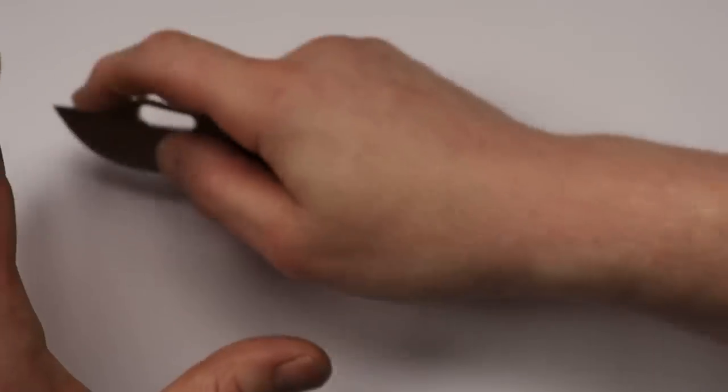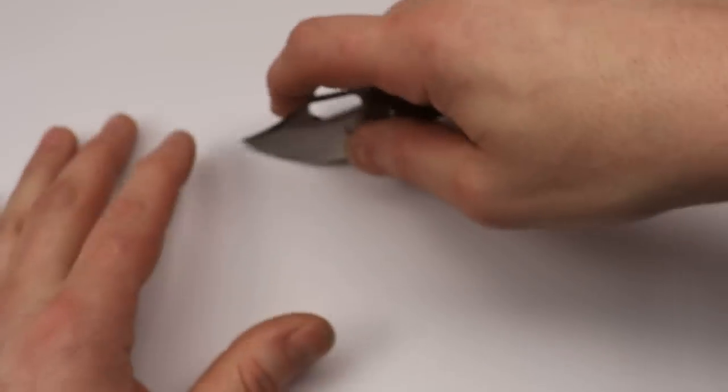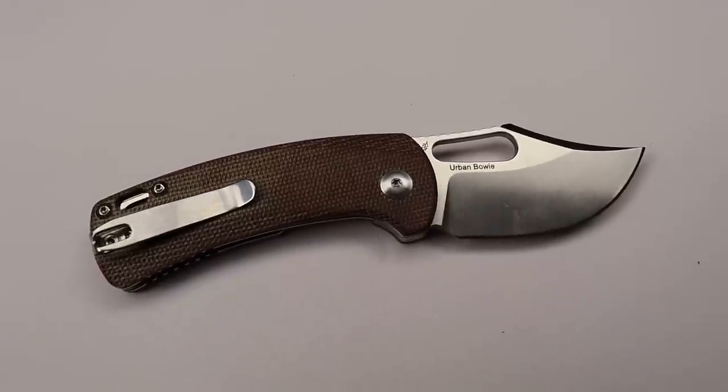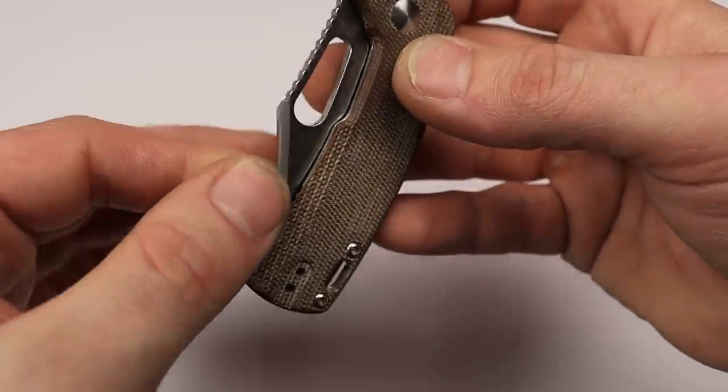Or if you just are the type of person that really likes to use the belly through your cuts, this is going to be great. And using the tip, you can do it, but it is a trailing bowie. So it persians up a little bit there.